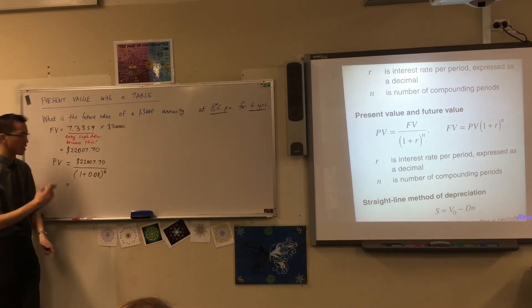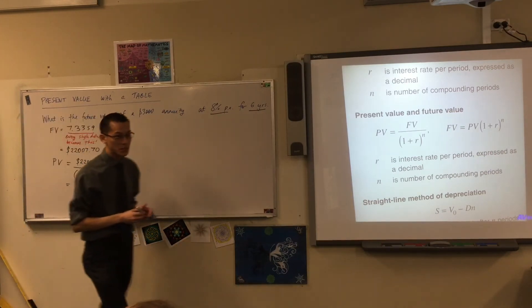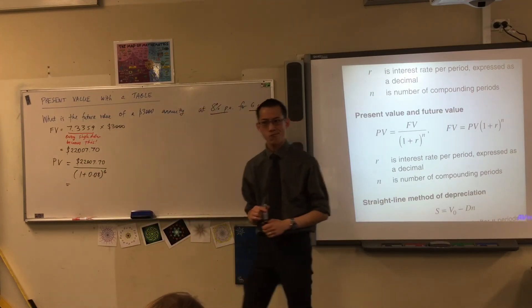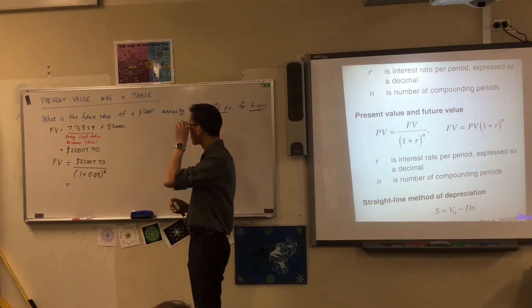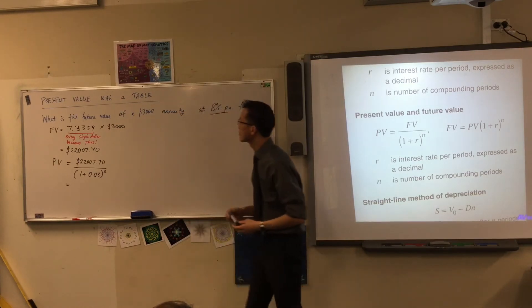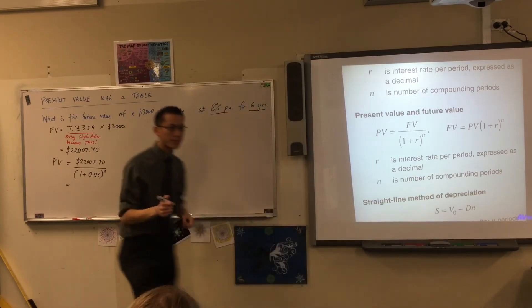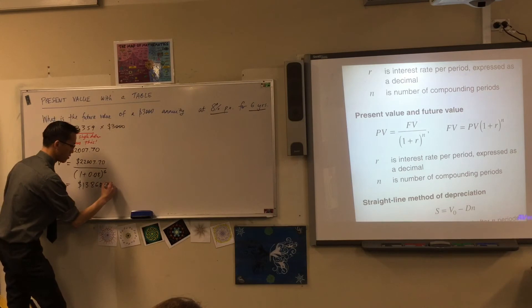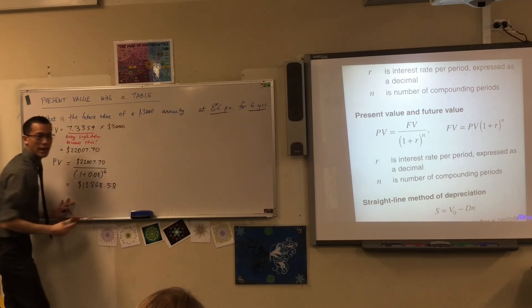Great. So this is going to give us a different number. Go ahead, reach for your calculator and again give me two decimal places. What's the answer? $13,868.584. So we'll round that to $13,868.58.